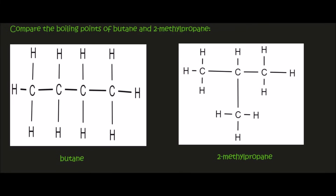Hello everyone. In this lesson we are going to compare the boiling point of butane, which is on the left, and 2-methylpropane. That is a propane, which is a 3-carbon molecule, and then on carbon number 2 we have a methyl, which is a 1-carbon branch.